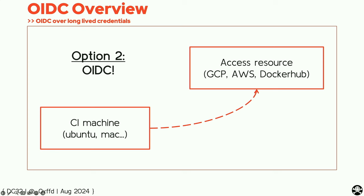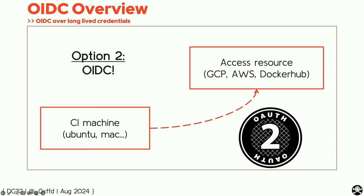OIDC stands for OpenID Connect — I forgot the full initials because I'm stressed, obviously. But what I want to emphasize is that it's a simple OAuth extension. I believe most of you know what OAuth is, but if you're on YouTube and you're not familiar with it, pause now, go learn OAuth, come back. OIDC is going to help us solve this whole credentials problem and it's going to allow us to use something called identities, which we're going to see in a second.